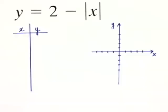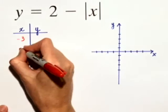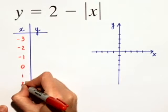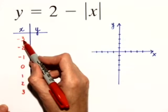For this problem, we're asked to graph an equation in the rectangular coordinate system. We have the equation y is equal to 2 minus the absolute value of x. We'll select some values for x starting at negative 3, negative 2, negative 1, 0, 1, 2, and 3. These are good numbers to start with, and if we need more numbers, we can always select more when we're done with these.